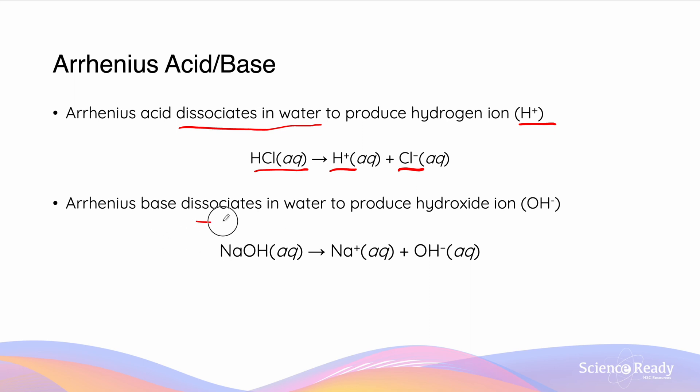An Arrhenius base will dissociate in water but this time will produce a hydroxide ion. So sodium hydroxide, for example, will dissociate in water to produce Na+ and the hydroxide ion.